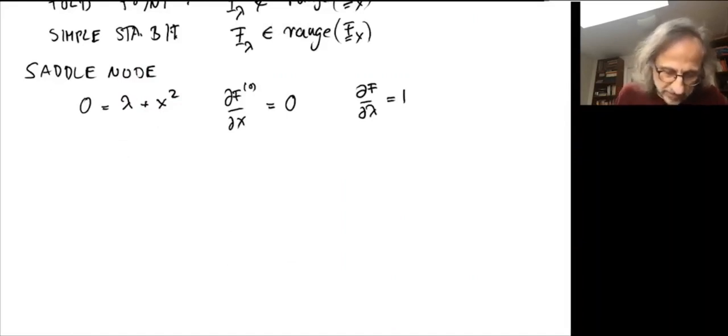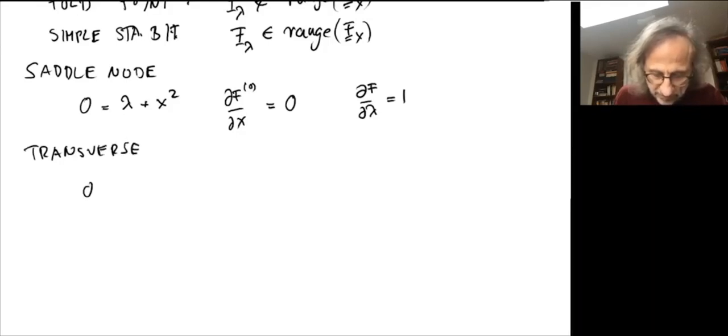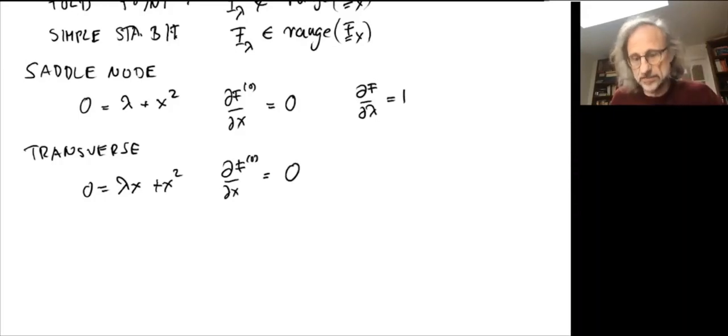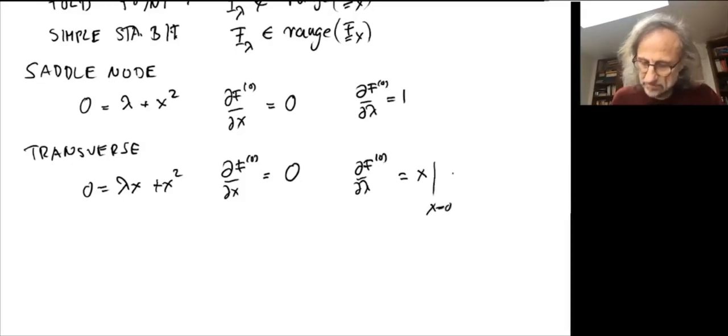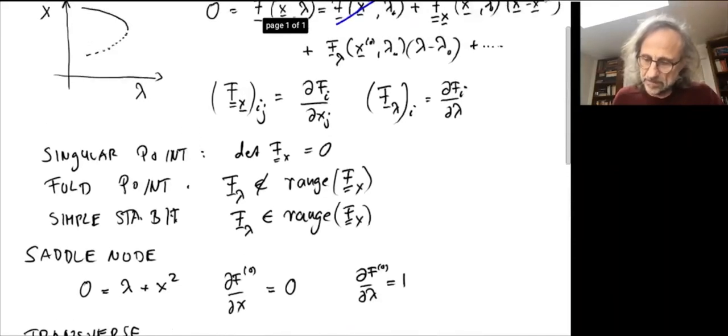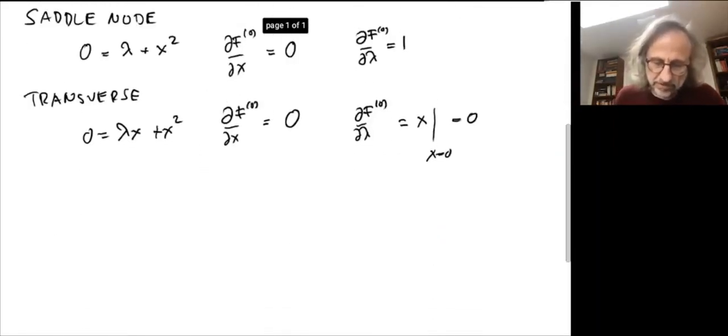So contrast that with a transverse bifurcation. There we would have lambda x plus x squared. And df/dx at the bifurcation point is still zero, it's a bifurcation point after all, so it has to have zero determinant. But df/d_lambda evaluated at the bifurcation point is x evaluated at x equals zero, which is zero. And so therefore, df/d_lambda is in the range of df/dx, and you can solve the equation at the linear order. And indeed, there is a solution at the linear order, which is x equals zero.